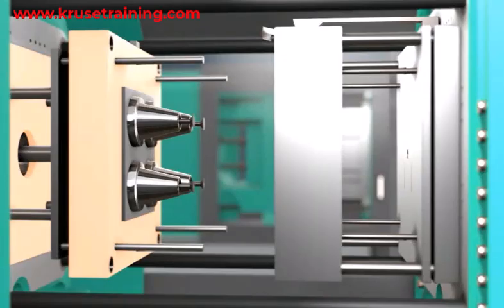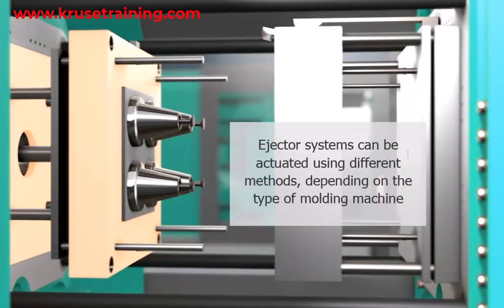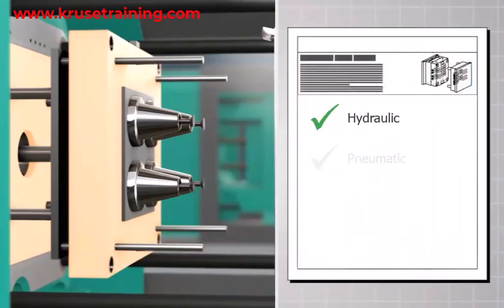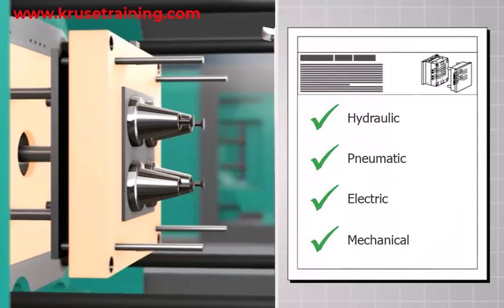The ejector system can be actuated using different methods, depending on the type of molding machine. Hydraulic, pneumatic, electric, or mechanical systems are commonly used to activate the ejector plate and drive the ejector pins.